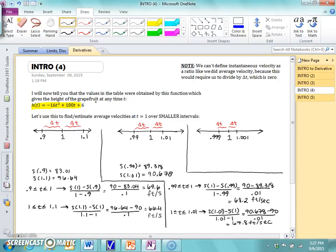One thing to keep in mind is we can, this is very important here, we can't define instantaneous velocity as a ratio like we did average velocity. Because this would require us to divide by the total change in time, which would be 0 for instantaneous velocity. And we can't divide by 0.